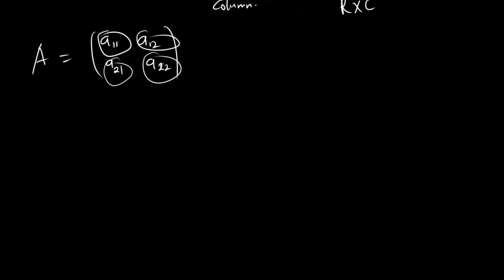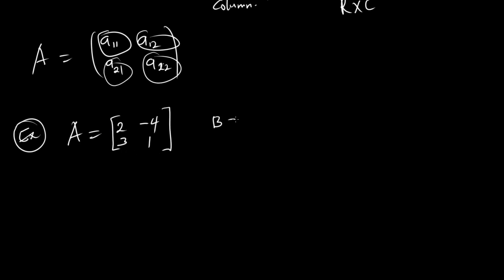Now, jumping straight to addition and subtraction of matrices. Let's look at an example. If you have a matrix A which is a 2 by 2 matrix — two rows and two columns — with elements 2, negative 4, 3, 1. And we have matrix B expressed as 1, 4, negative 2, 3. So both matrix A and matrix B are 2 by 2 matrices.